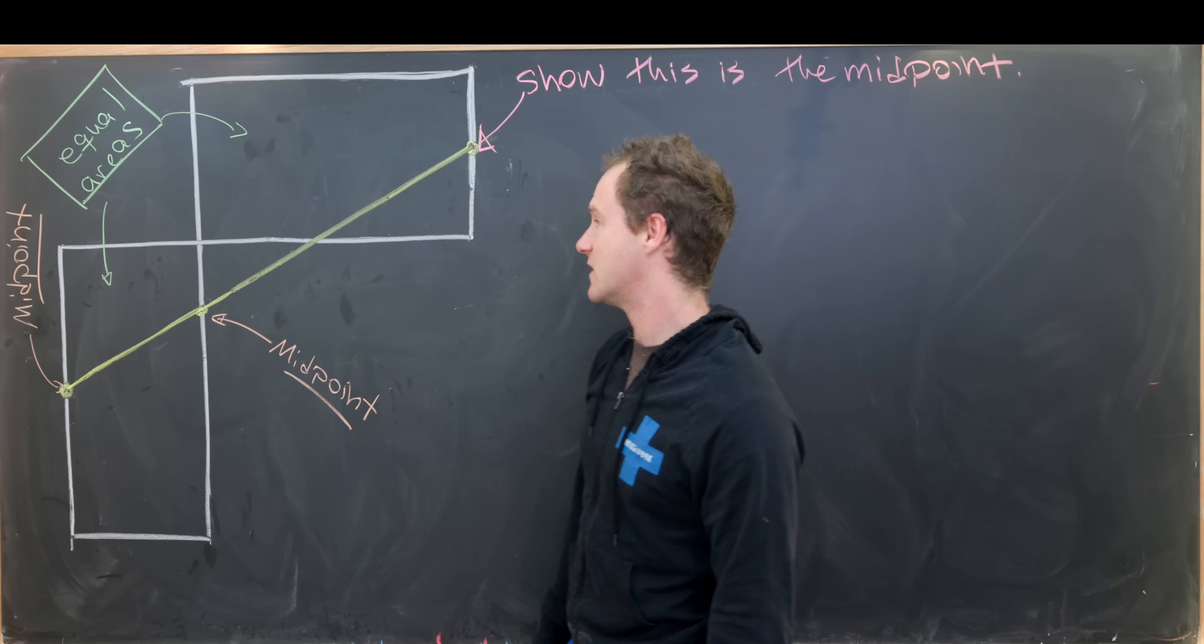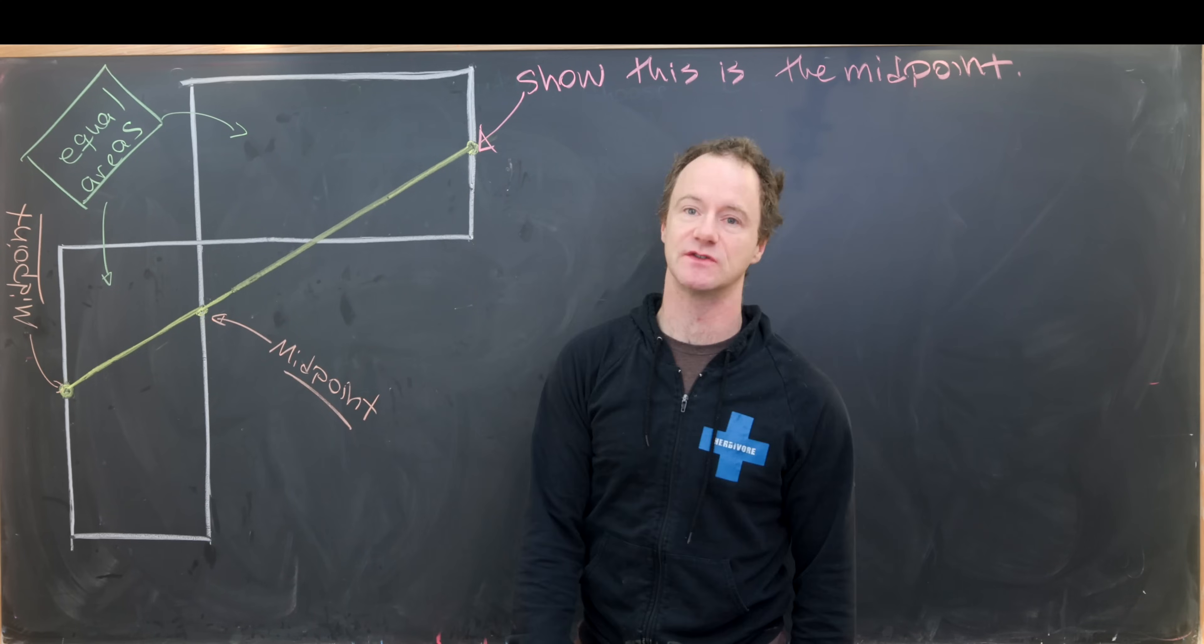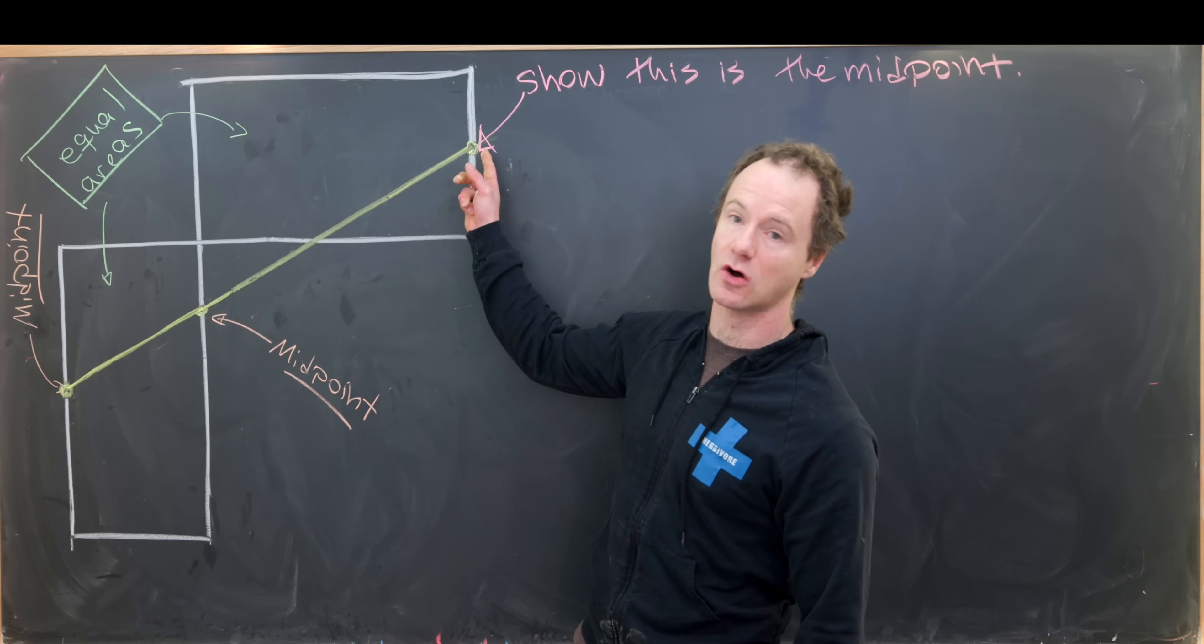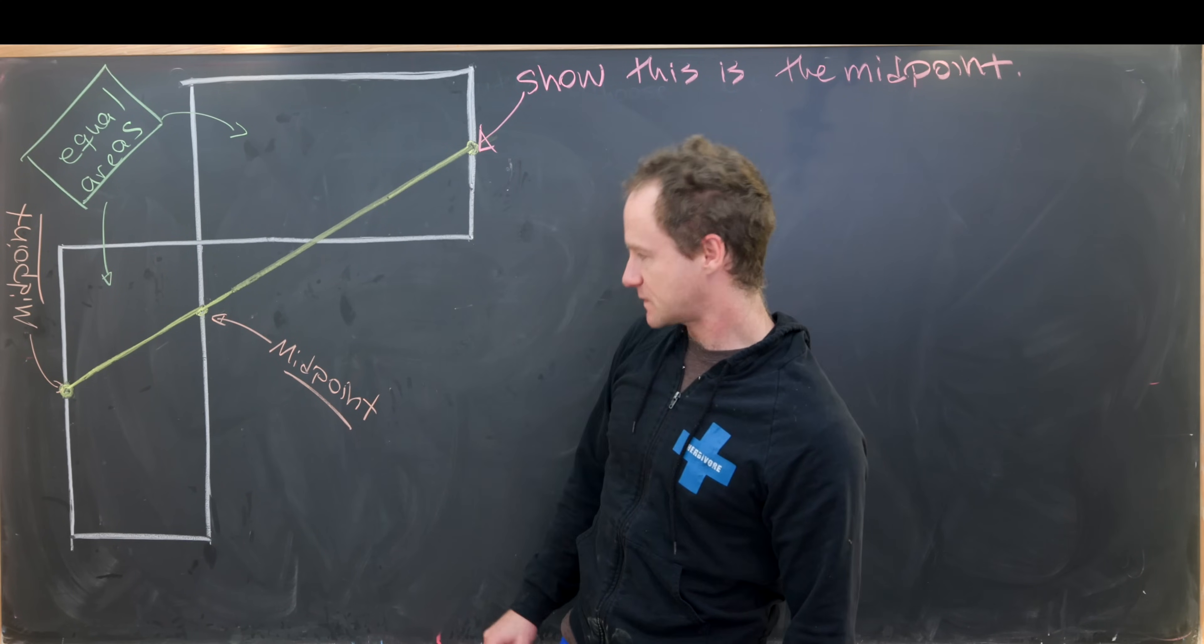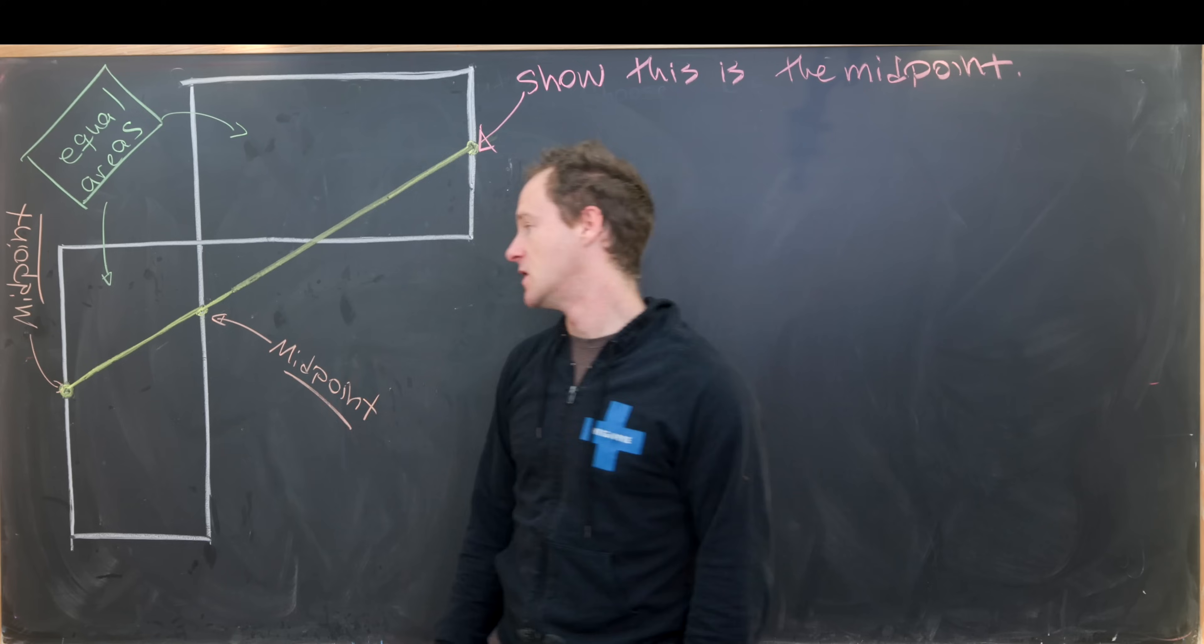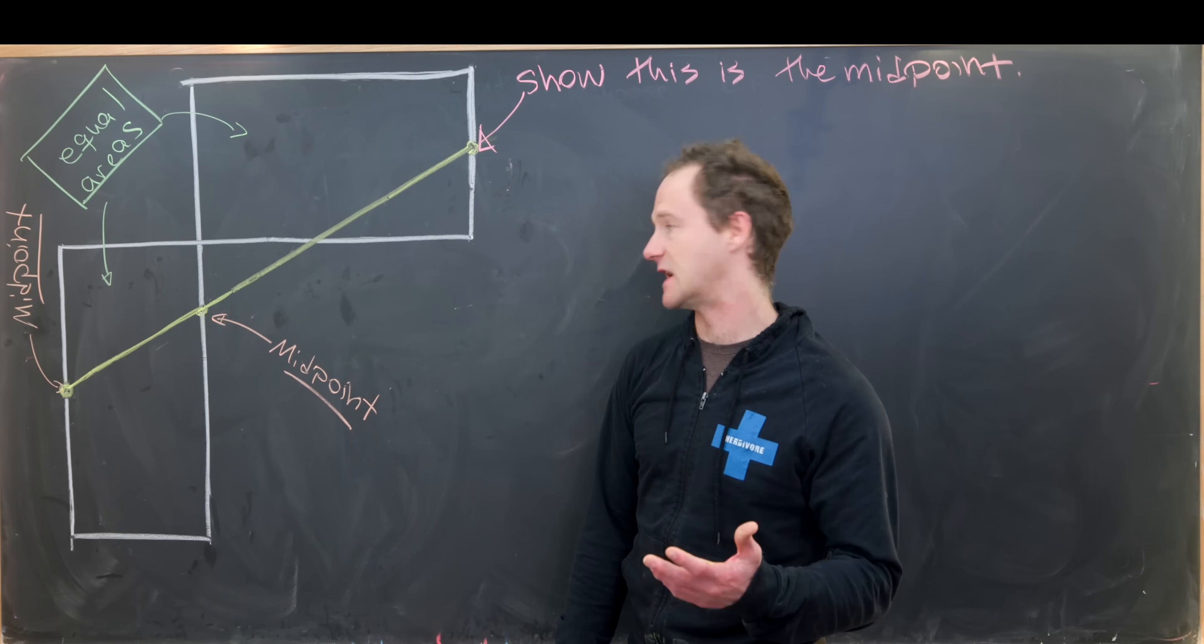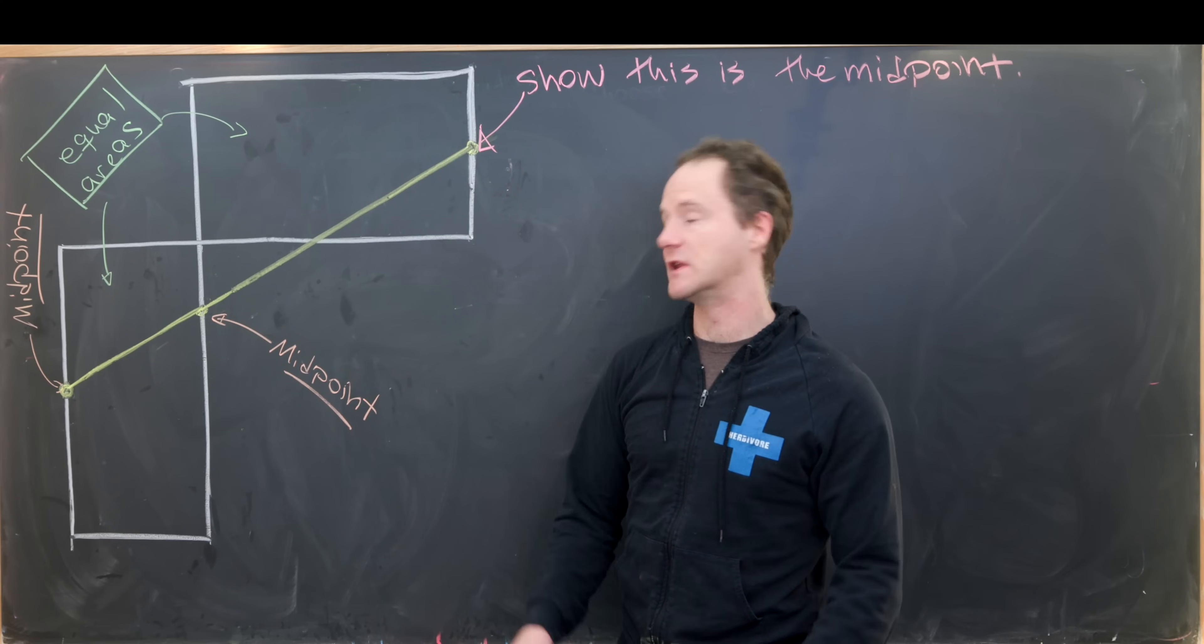We're given that these two areas of these rectangles are equal, and our goal is to show that this is also the midpoint. In other words, the midpoints of these three edges, the vertical edges of these rectangles, are collinear.